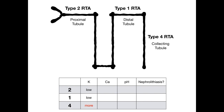But type 4 renal tubular acidosis has hyperkalemia. So 'more' in the mnemonic — 2-1-4, low, low, more — means type 4 has more potassium, i.e., hyperkalemia. I put it in red because this is the abnormal one — it's the different one. So if they're asking you a question on test day about what potassium is doing in an RTA, chances are they're asking about type 4, because it's the only one with hyperkalemia. Type 2 and type 1 both have hypokalemia.